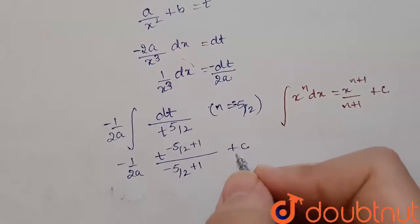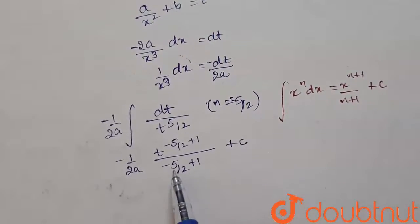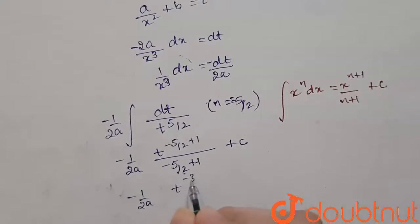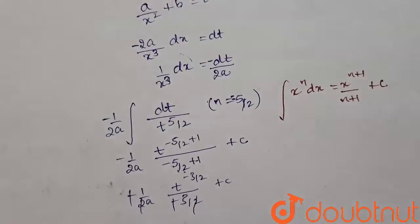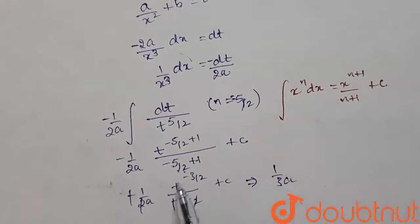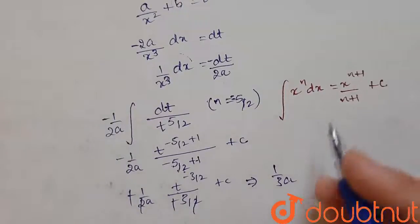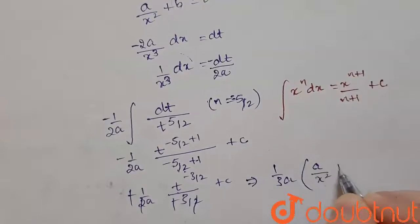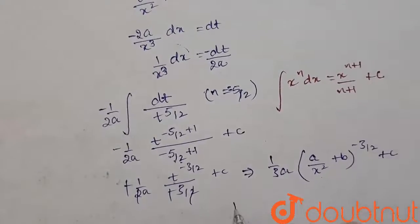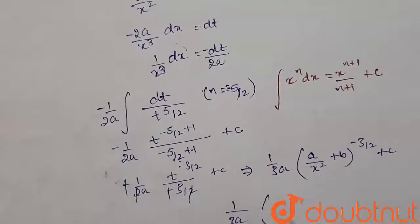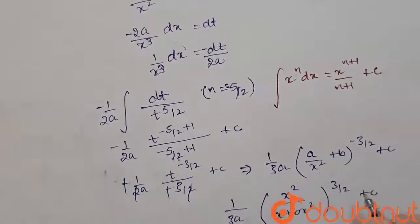This simplifies to minus 1/2a · t^(−3/2) divided by minus 3/2 plus c. The two negatives cancel out, and 2 and 2 cancel, giving us 1/3a · t^(−3/2) plus c. Substituting back t = a/x² + b, we get 1/3a · (a/x² + b)^(−3/2) + c. Taking the LCM, this becomes 1/3a · x²/(a + bx²)^(3/2) + c.